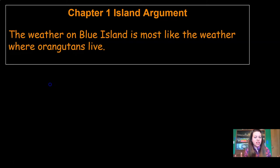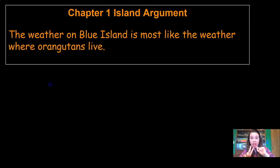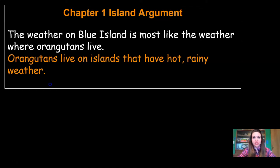Now, if somebody was reading our argument, they may not know what the weather is like where orangutans live, so we should probably give them a little more information. Do you remember what the weather's like where orangutans live? What two things are we looking for? Yeah, we're looking for hot weather and rainy weather. So let's add that to our argument. Orangutans live on islands that have hot, rainy weather. Now we can be sure that our audience knows what kind of weather we're looking for.